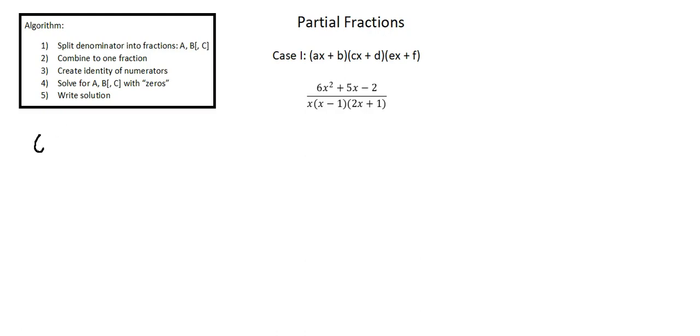So let's begin with the expression we're given, 6x squared plus 5x minus 2 over x times x minus 1 times 2x plus 1 and we're going to create an identity. This isn't an equation. This isn't true for one or limited x values. This is true for all x values.